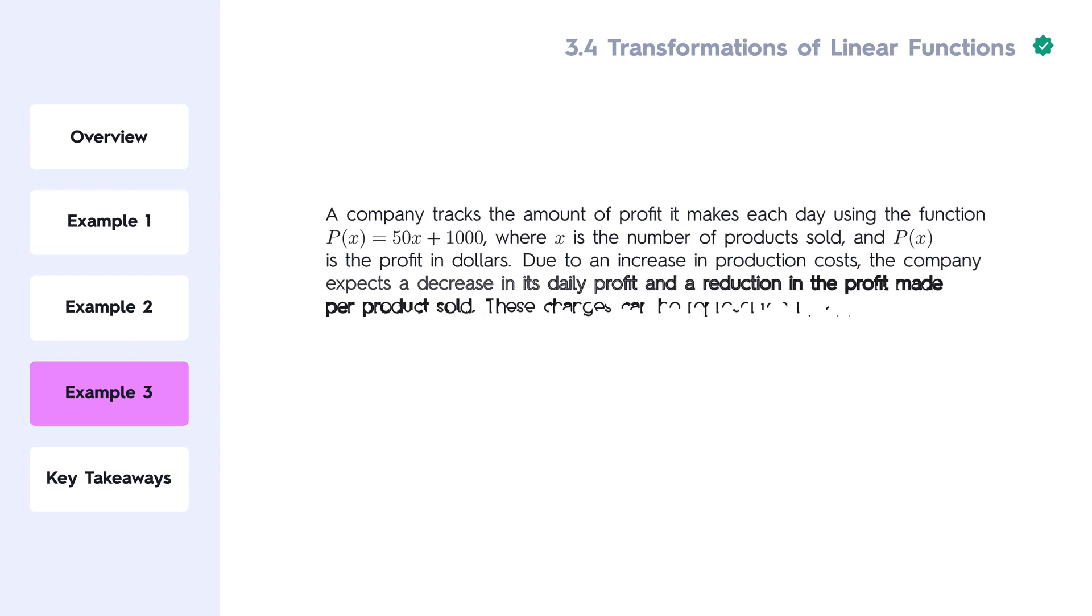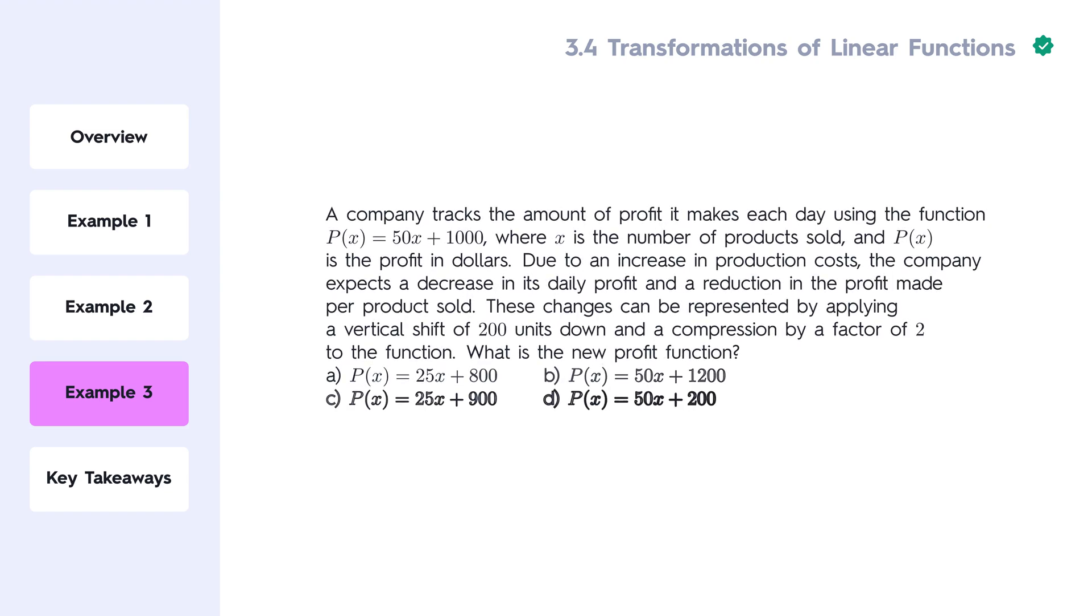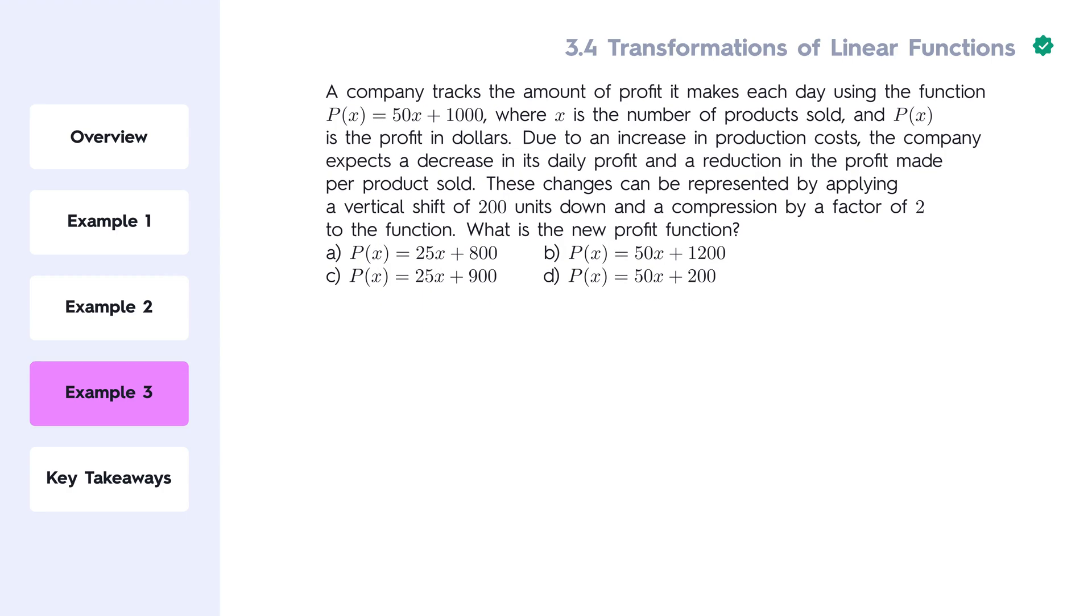A company tracks the amount of profit it makes each day using the given function p of x, where x is the number of products sold, and p is the profit in dollars.